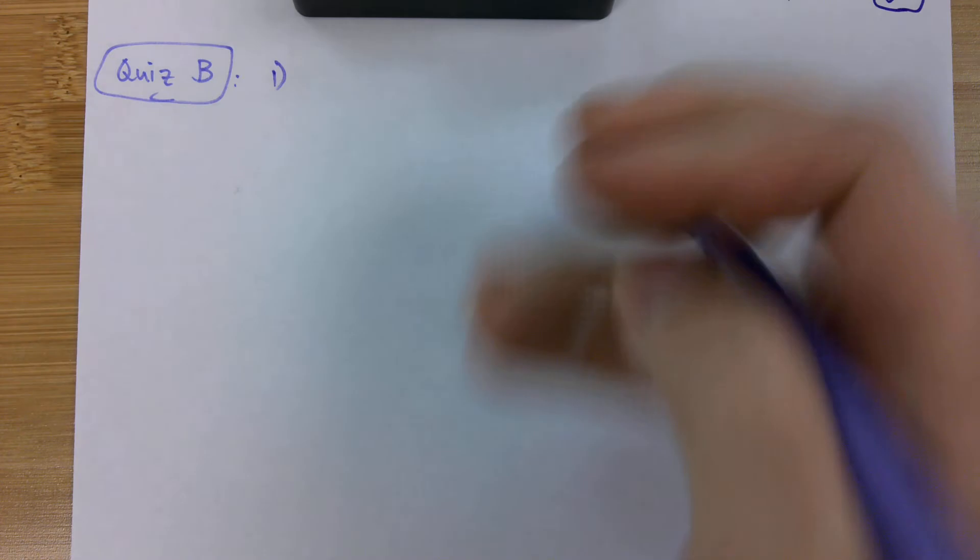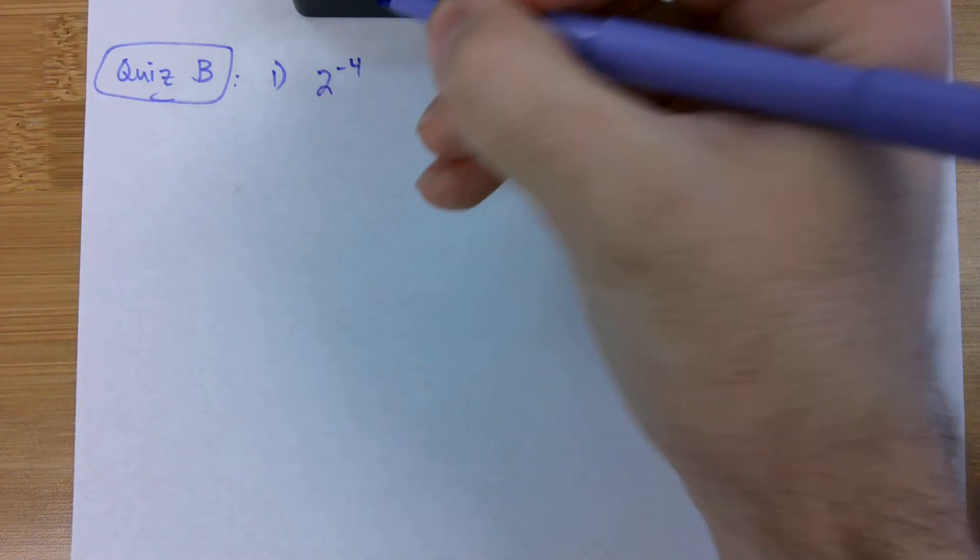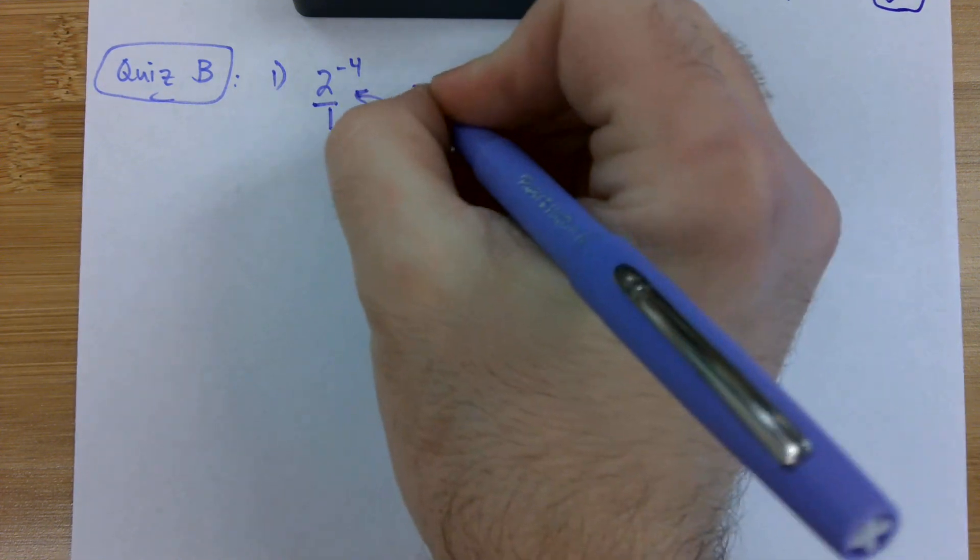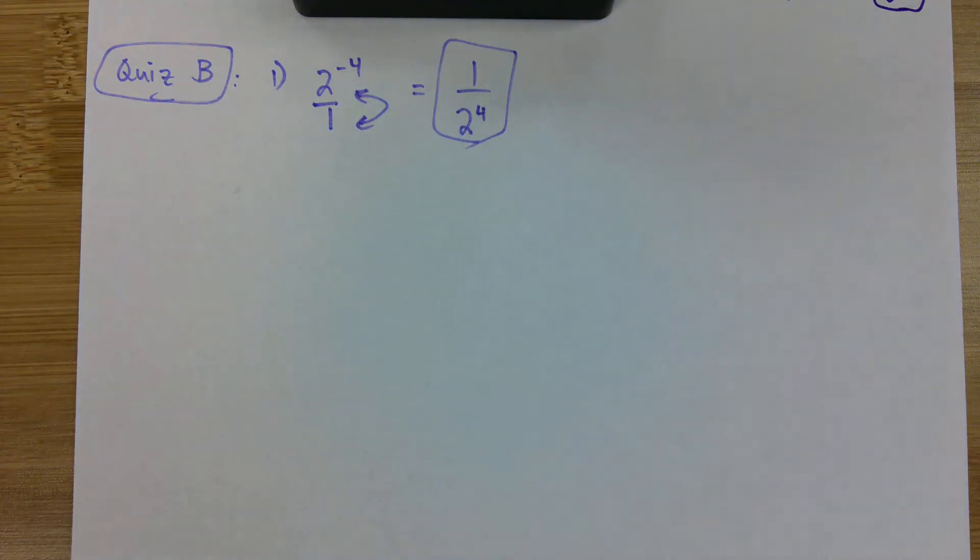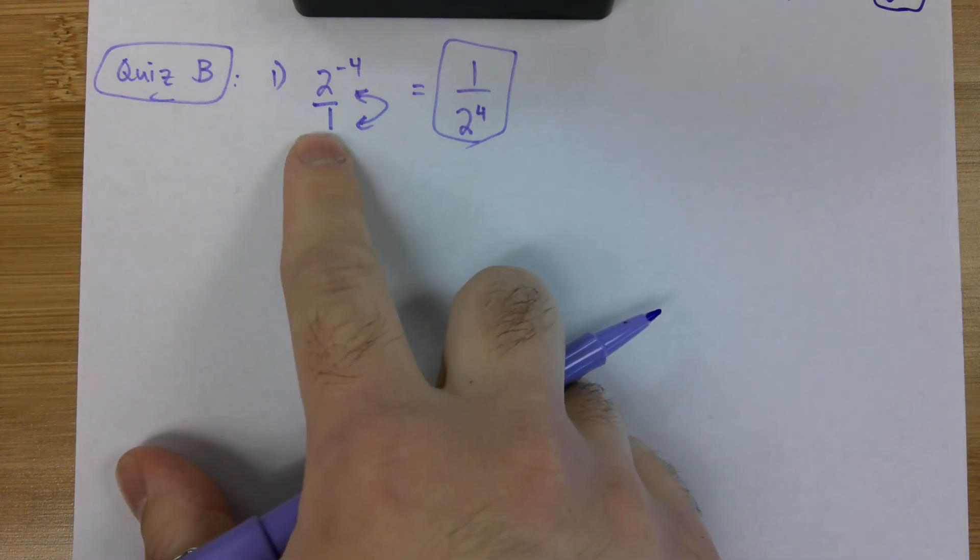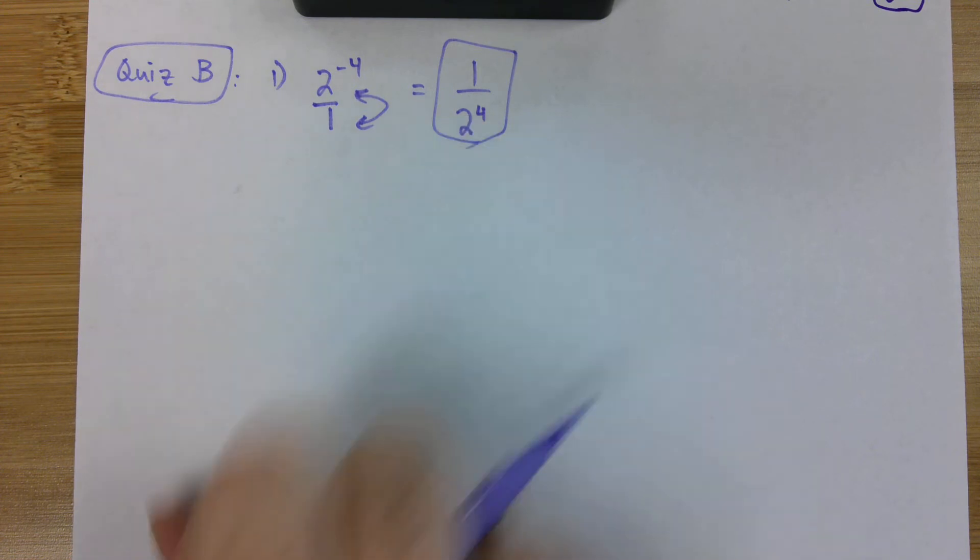Let's start with number one, two to the negative fourth. Again, whenever we have a negative exponent, put it over one, flip it around, and make the exponent positive. And that's our answer. One over two to the fourth.